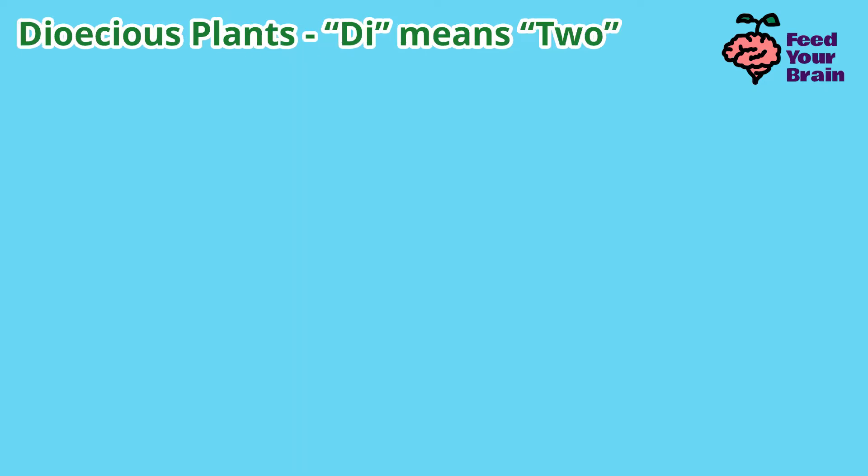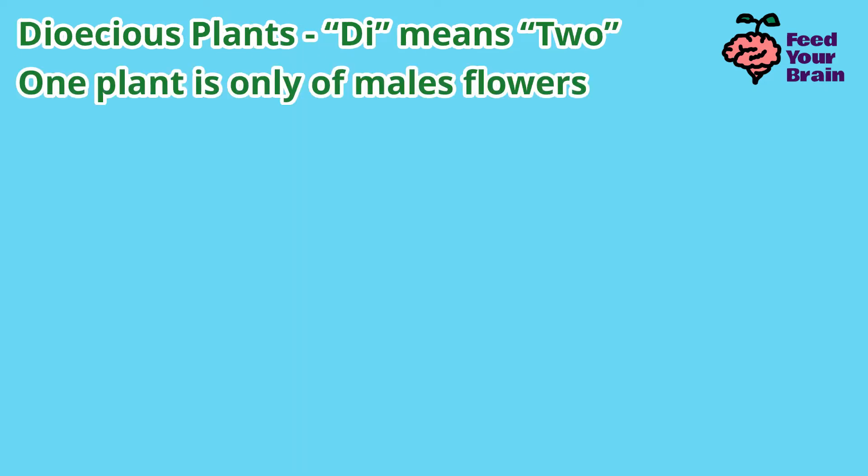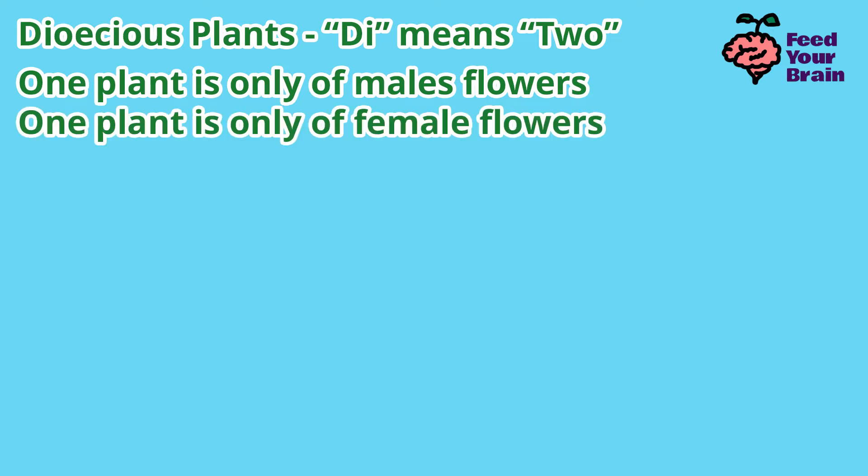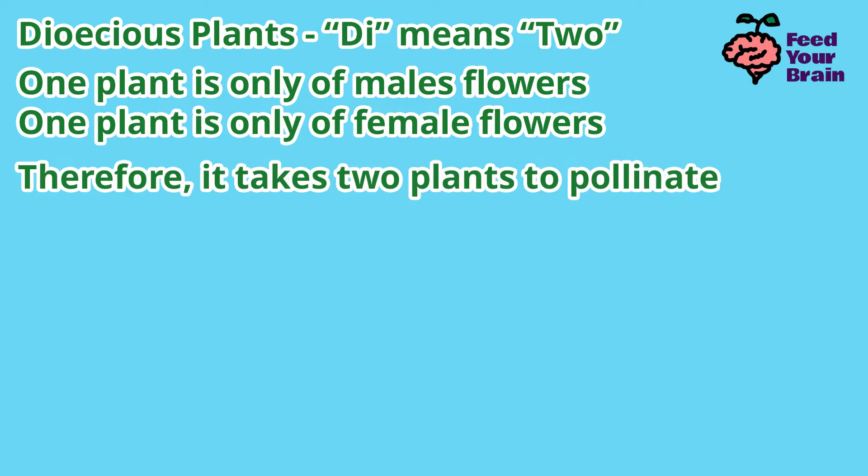Dioecious plants — 'di' means two. One plant has only male flowers, and one plant has only female flowers. Therefore, it takes two plants to pollinate.